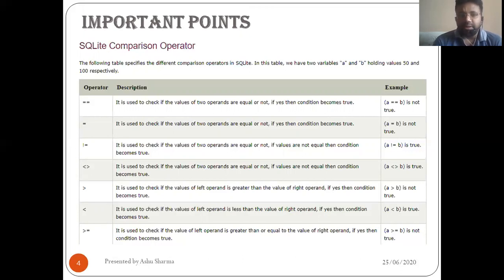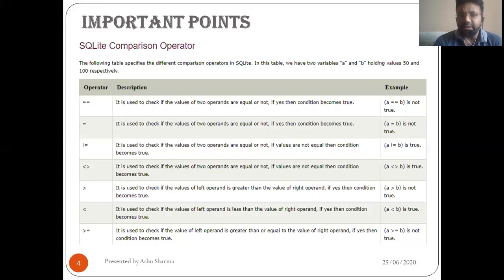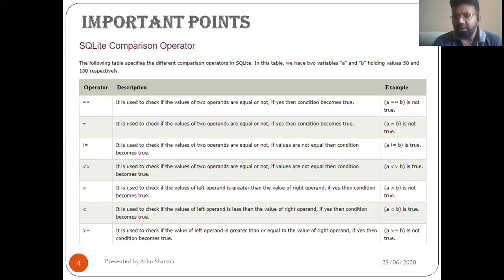Next is the not equal operator. It is used to check if the values of two operands are equal or not. If values are not equal, the condition becomes true. Then we have the greater-than and less-than type operators. It is used to check if the values of two operands are equal or not — if values are not equal, the condition becomes true, since there is no assignment involved. Next, the greater-than operator checks if the value of the left operand is greater than the value of the right operand. A is 50, B is 100, so 50 greater than 100 is not true.